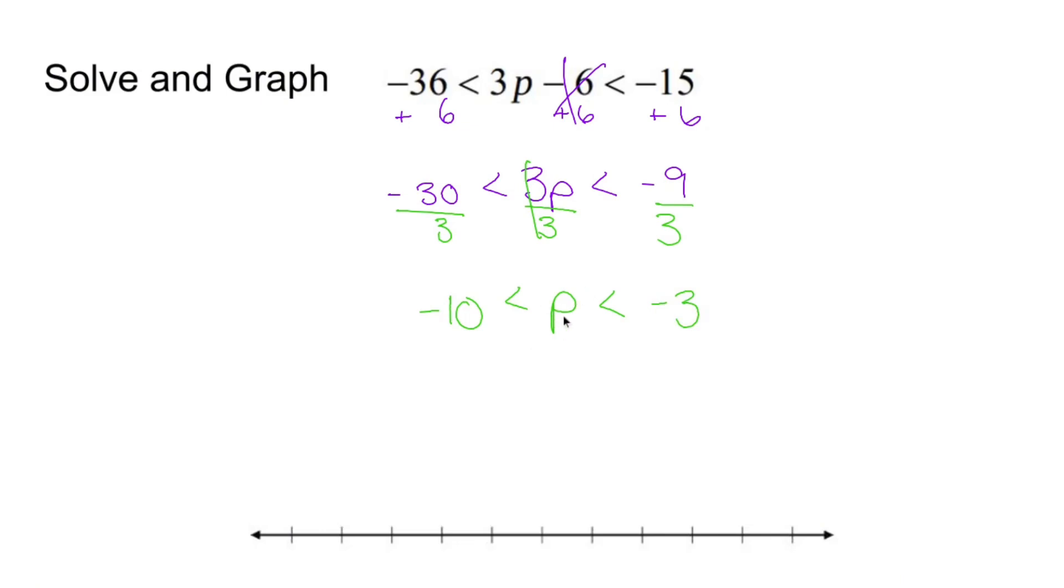And now what this says is p is any number in between and not including negative 10 and negative 3. So what we need to do is we need to mark this up.